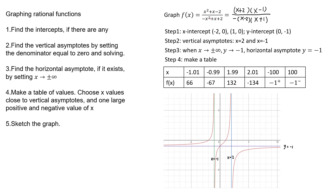Let's use a more complicated rational function as an example. First, factor the expression to help find the key values. Setting the numerator equal to zero gives us x-intercepts at (−2, 0) and (1, 0). Setting x = 0 gives the y-intercept at (0, −1). So we already have three points to plot.